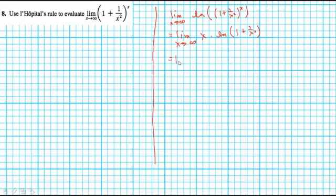So we need to do one more rewrite so that we can apply L'Hopital's rule, and that is to rewrite it as the natural log of 1 plus 1 over x squared divided by 1 over x. This is now indeterminate in the form of 0 over 0.